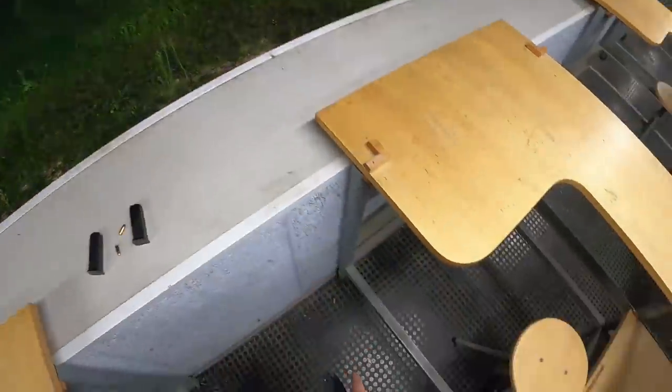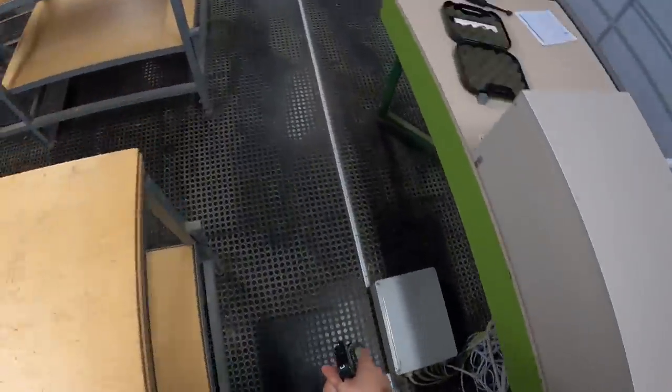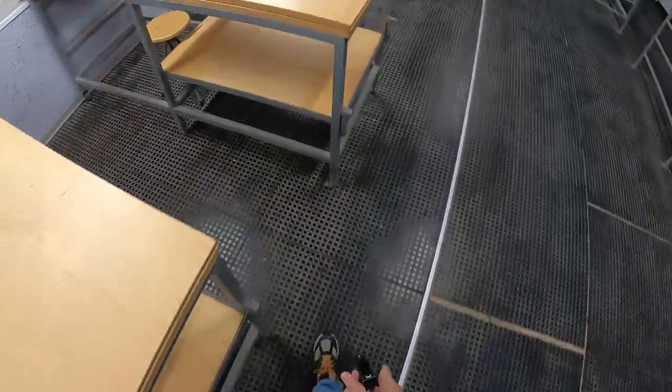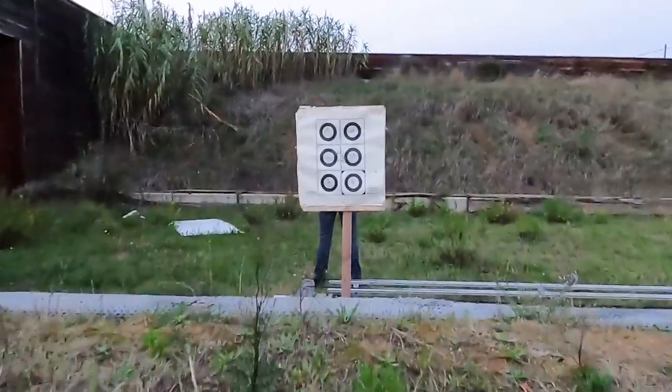Rule 1. Never, under any circumstance, point a gun towards anything you're not willing to kill or destroy, even if it's unloaded and with a bolt open. And that includes what stays behind your target.